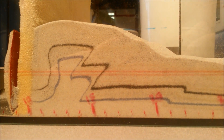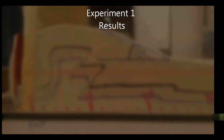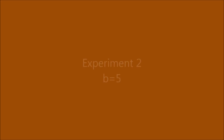At this point we are at the 10 cm deformation and we measure the critical taper once more. The results of the first experiment show an average of 25 degrees for alpha plus beta, which is the critical taper.